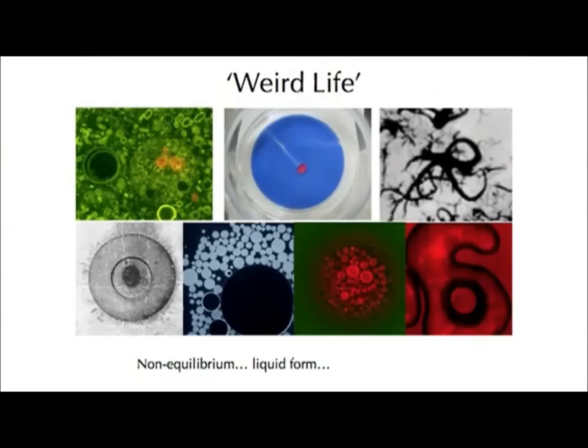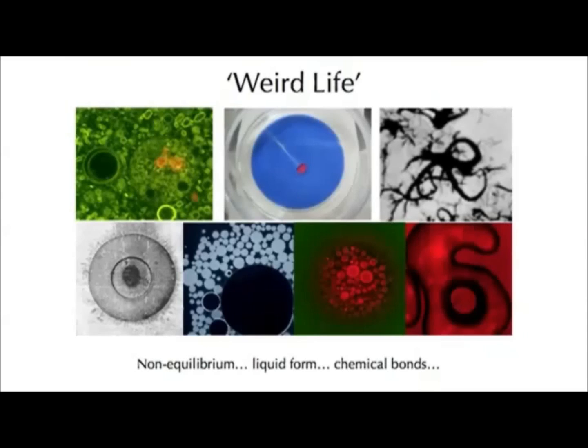Secondly, life needs to be in liquid form — even if we had interesting structures and interesting molecules together, if they were frozen solid, that is not a good place for life. Thirdly, we need to be able to make and break chemical bonds — this is important because life transforms resources from the environment into building blocks so it can maintain itself.